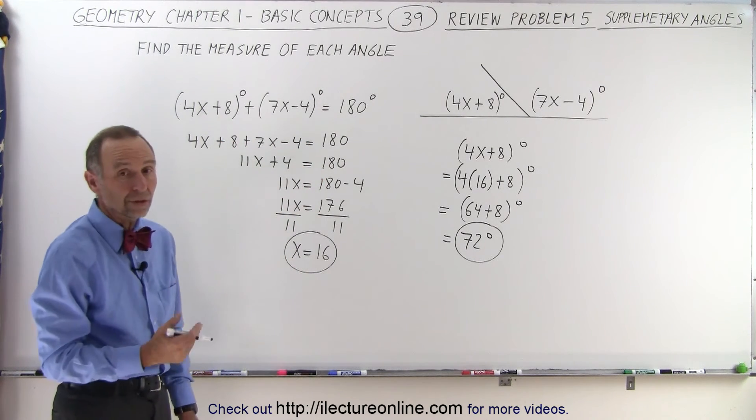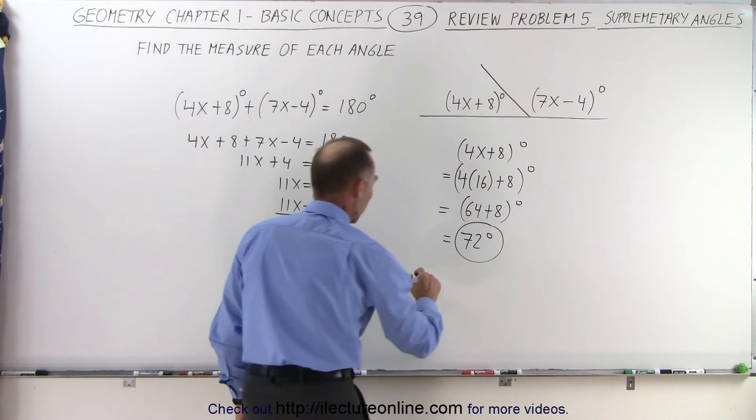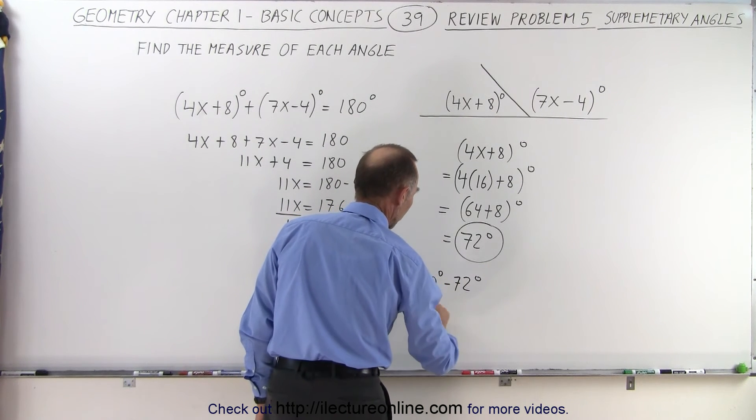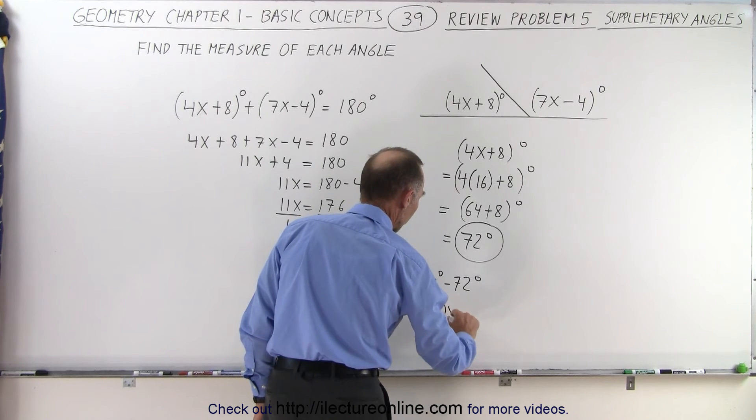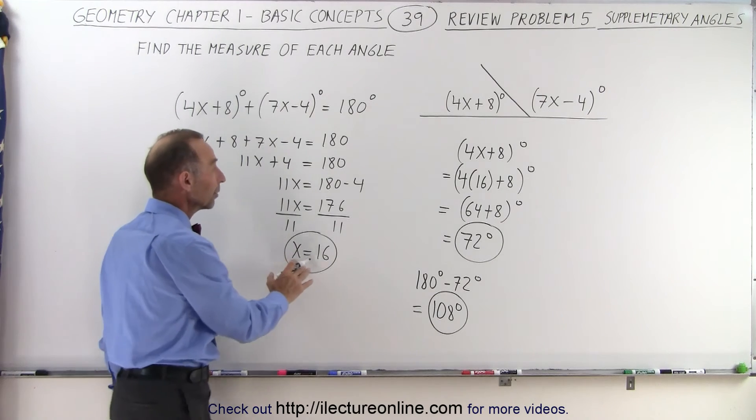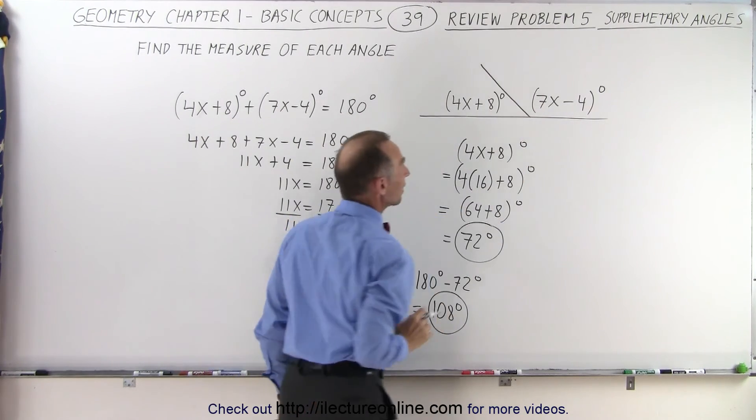From that we can deduce that the other angle must be 180 degrees minus 72 degrees which means the other angle should be 108 degrees. Now we can check that by plugging the value for x equals 16 in this angle right here.